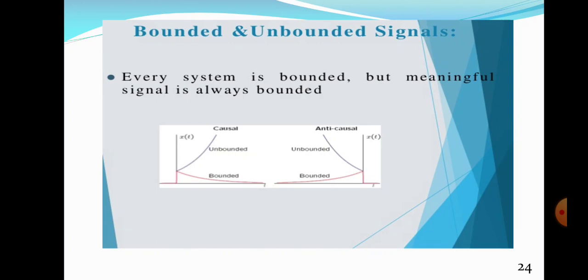Next: bounded and unbounded signal. For a finite input or bounded input, if the output is also bounded or finite, it will be a bounded signal. Finite means bounded; bounded means finite. What about unbounded? Even if the input signal is finite or bounded, if the output is not finite or bounded, it will be an unbounded signal.